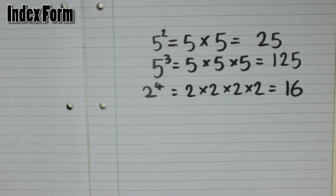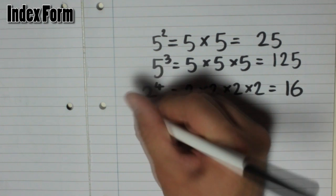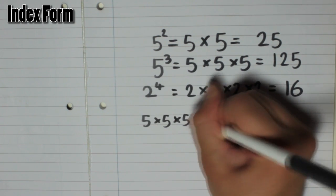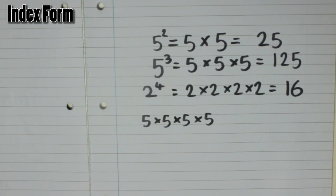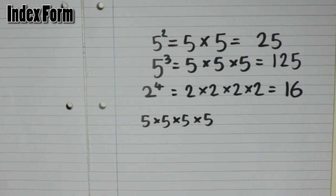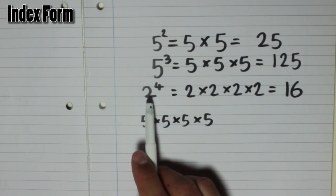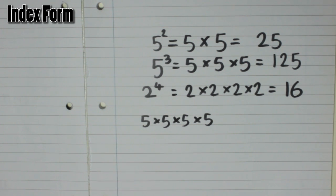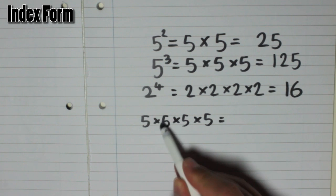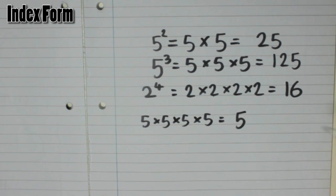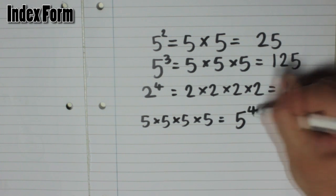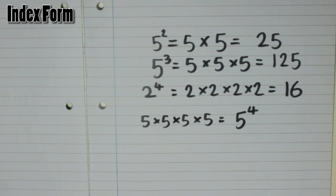So now let's say someone gave us a sum — for example, 5 times 5 times 5 times 5. If we had to write that in index form, it means we write it with the little number. So that would be 5, because that's the main number, to the power of 4, because there are 1, 2, 3, 4 of them. That's index form.